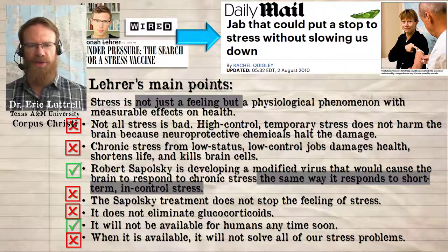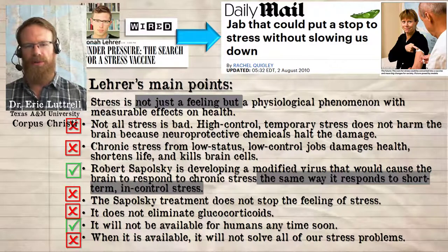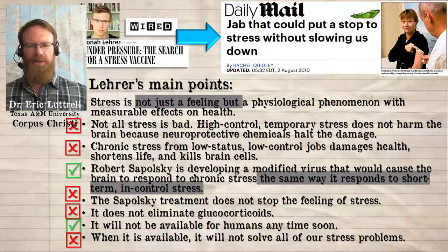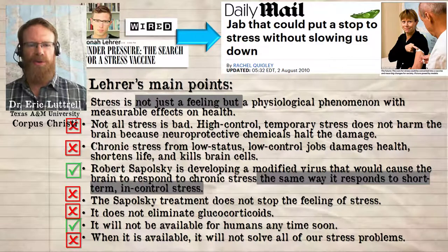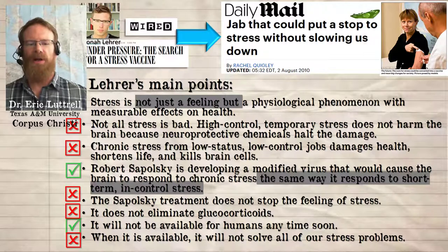The biggest problem that Lehrer confronted was the prevalence of these assumptions about stress that would cause the general reader to misinterpret what Sapolsky's research set out to do. Sapolsky wasn't trying to soothe the feeling of stress — he wasn't looking to make people feel better. He was trying to stop brain damage. But when Rachel Quigley reduced Lehrer's 6,800 word article into her 400 word article, she didn't bother distinguishing between common frames and the complex realities of Sapolsky's virus. She briefly mentioned glucocorticoids and that they can destroy brain cells, but she inserts this quotation from this anonymous source that completely negates that description and adopts the common frame of stress as merely a feeling. In other words, the article about Sapolsky's research doesn't actually understand Sapolsky's research. That means anyone who uses this article as a source will have an illusion of understanding, but won't actually know anything.